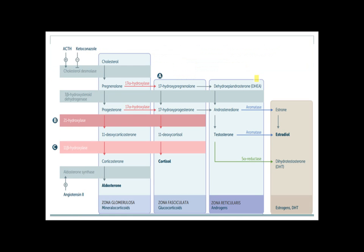All hormones secreted from the adrenal gland are steroid hormones sharing the same precursor: cholesterol. Cholesterol ultimately gives rise to aldosterone from the glomerulosa, cortisol from the fasciculata, and testosterone and other androgens from the reticularis. Cholesterol undergoes multiple metabolic steps involving multiple enzymes, and these enzymes can be deficient in some people.